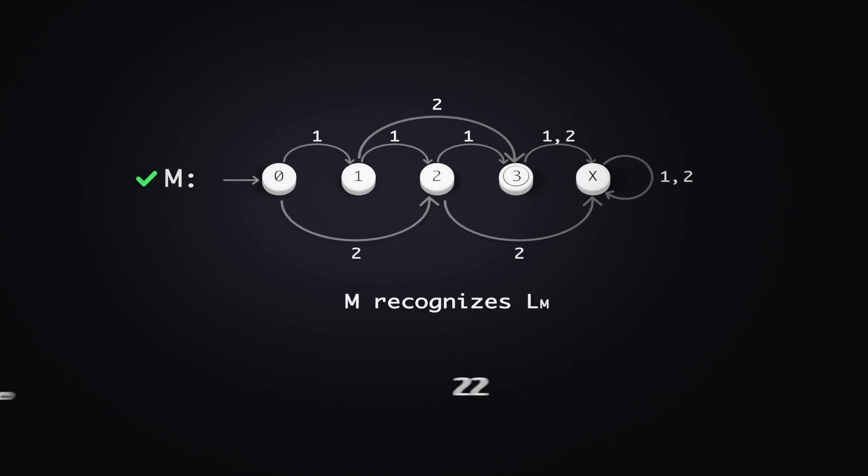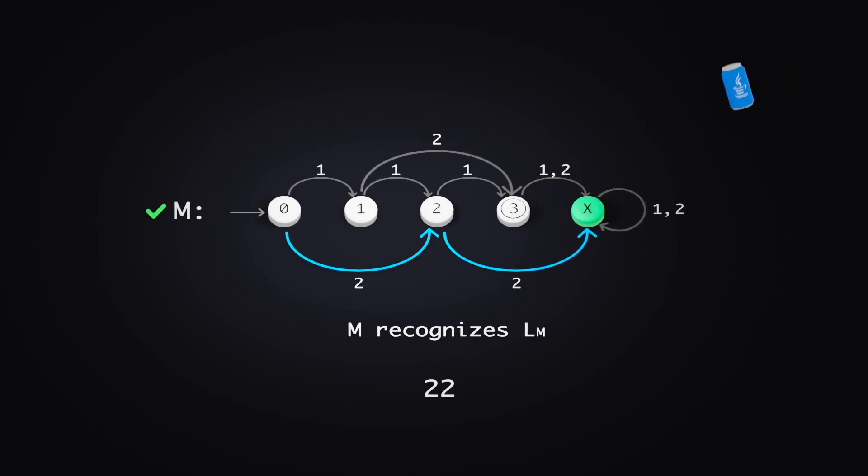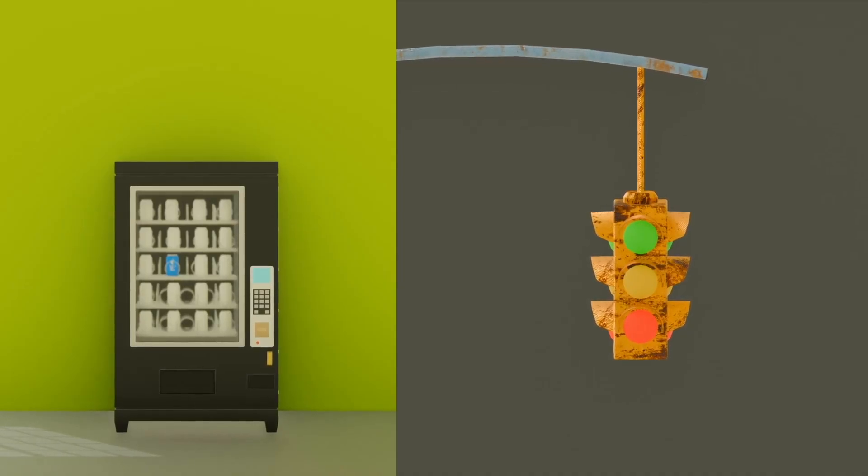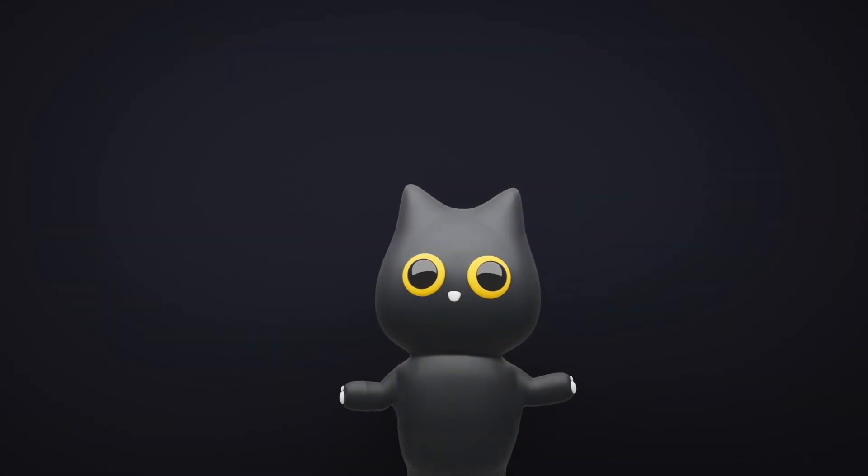So, if you put 2 $2 notes in for example, the machine will simply reject it and no coffee will be given. Great! At this point, we have seen 2 applications of DFAs. Now we can look at it more formally.